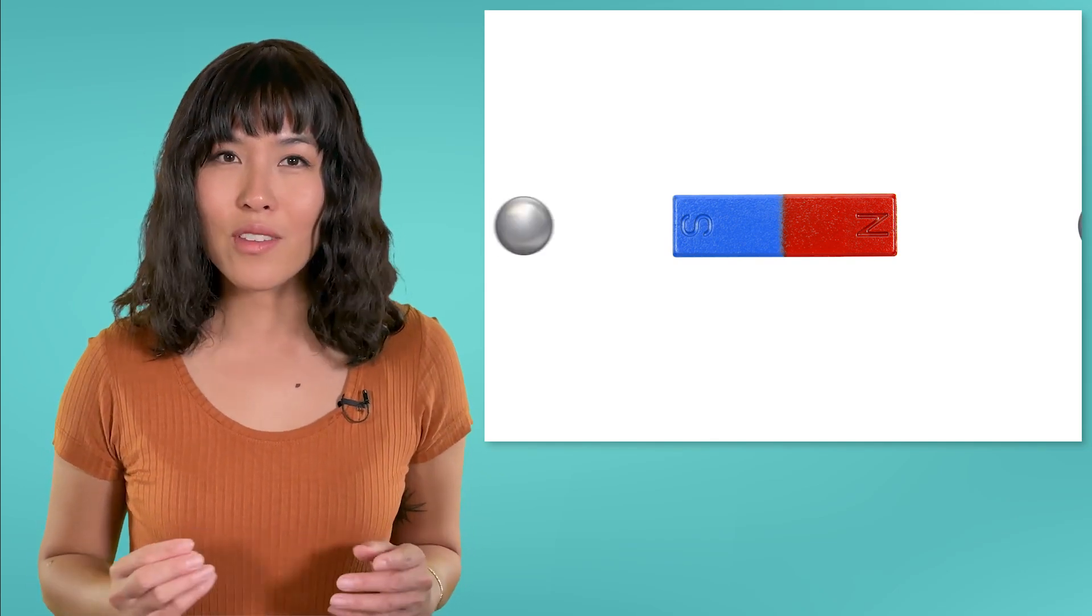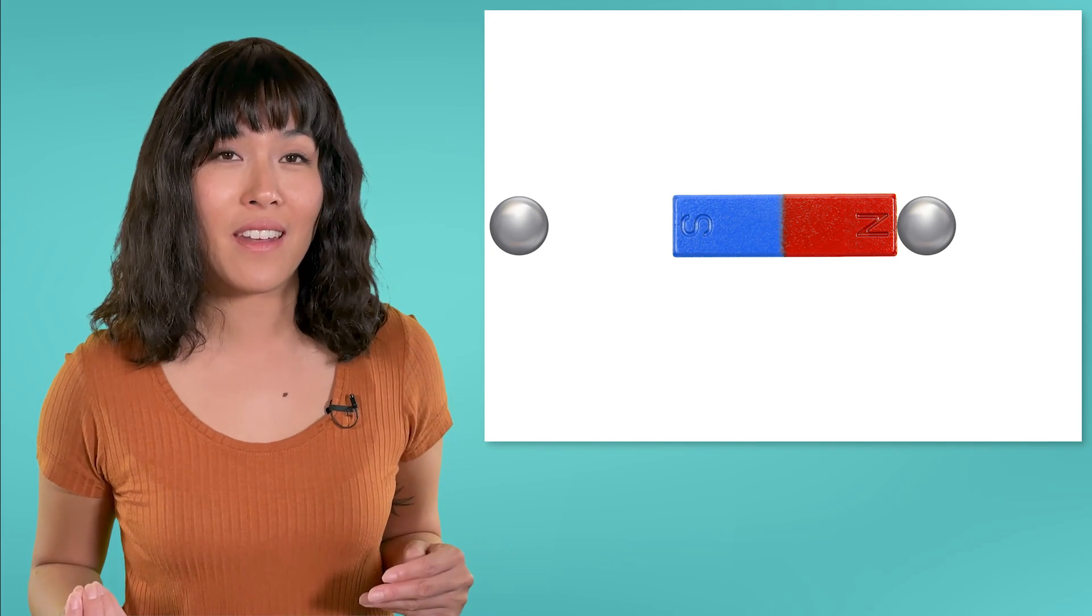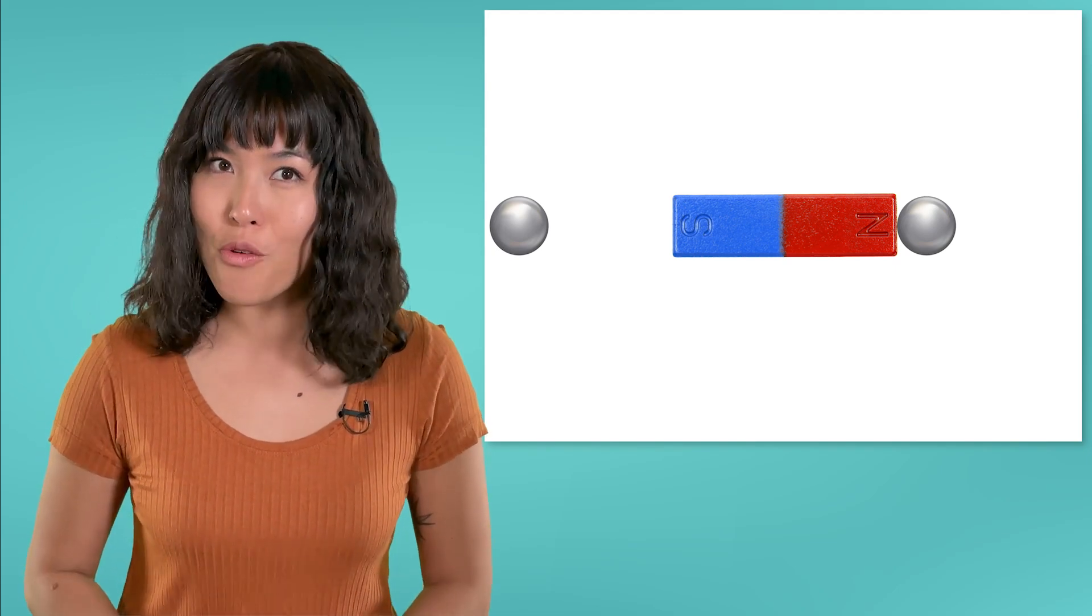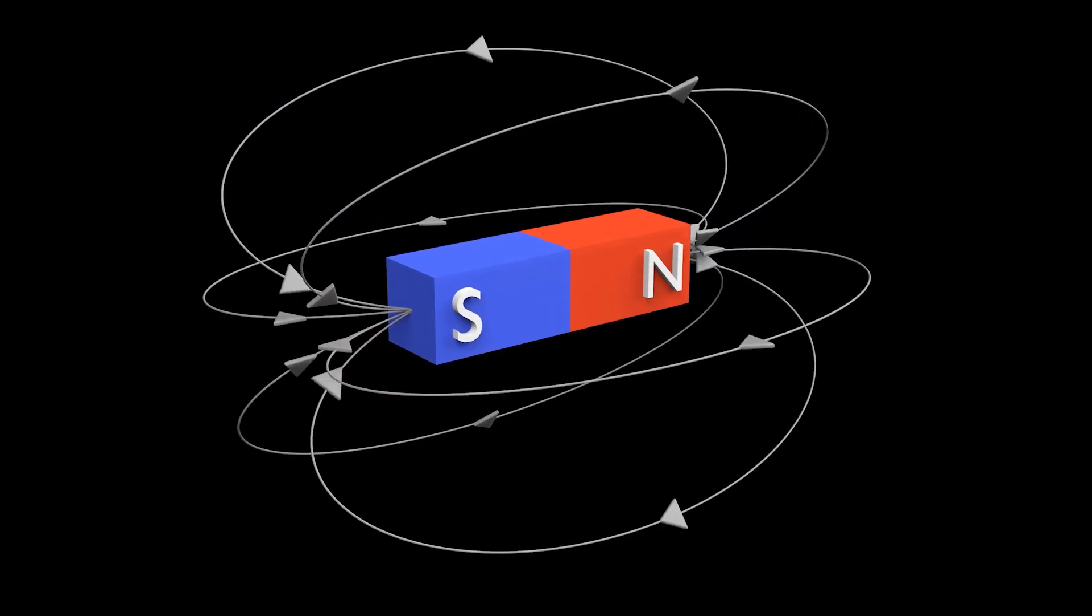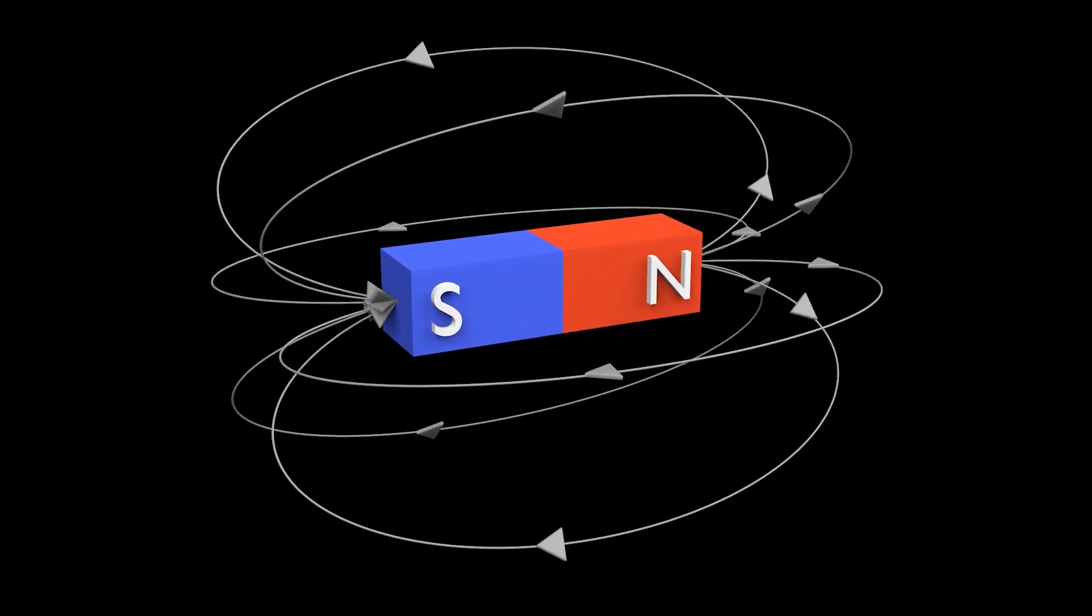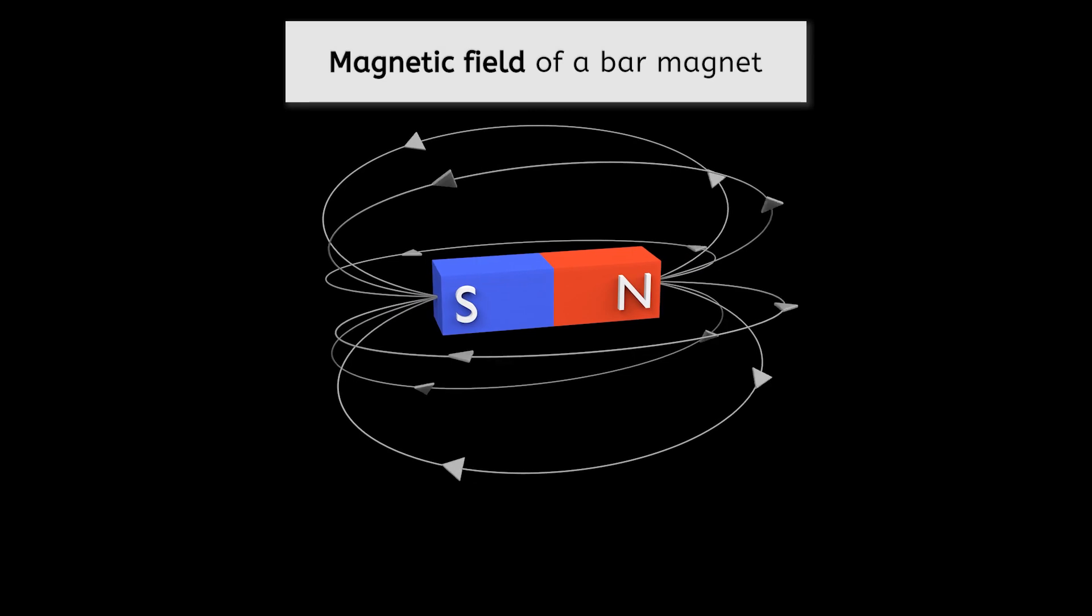When you bring certain metals near a bar magnet, they are either attracted to or repelled from it, showcasing the invisible force that the magnet exerts. This invisible force surrounds the magnet in what we call a magnetic field.